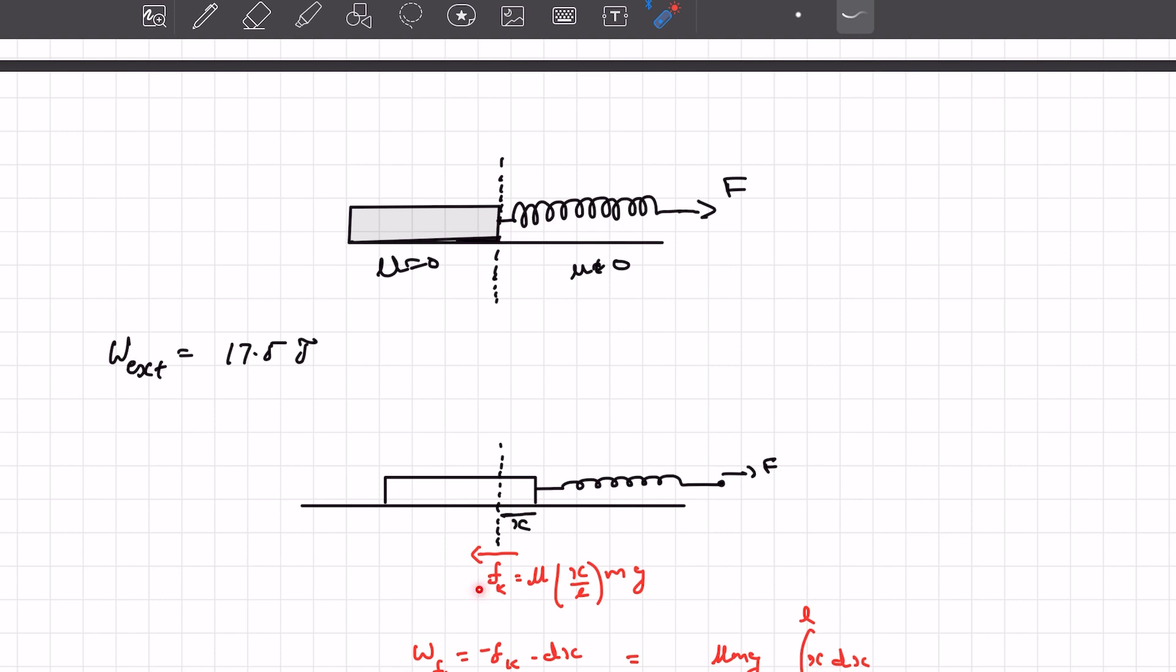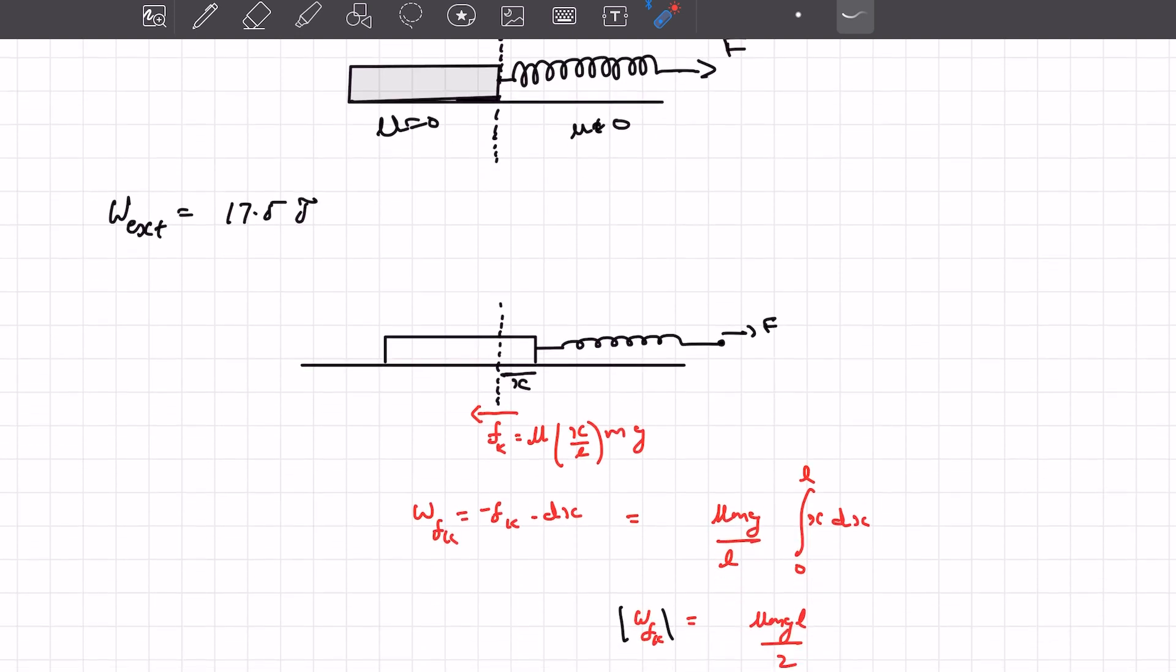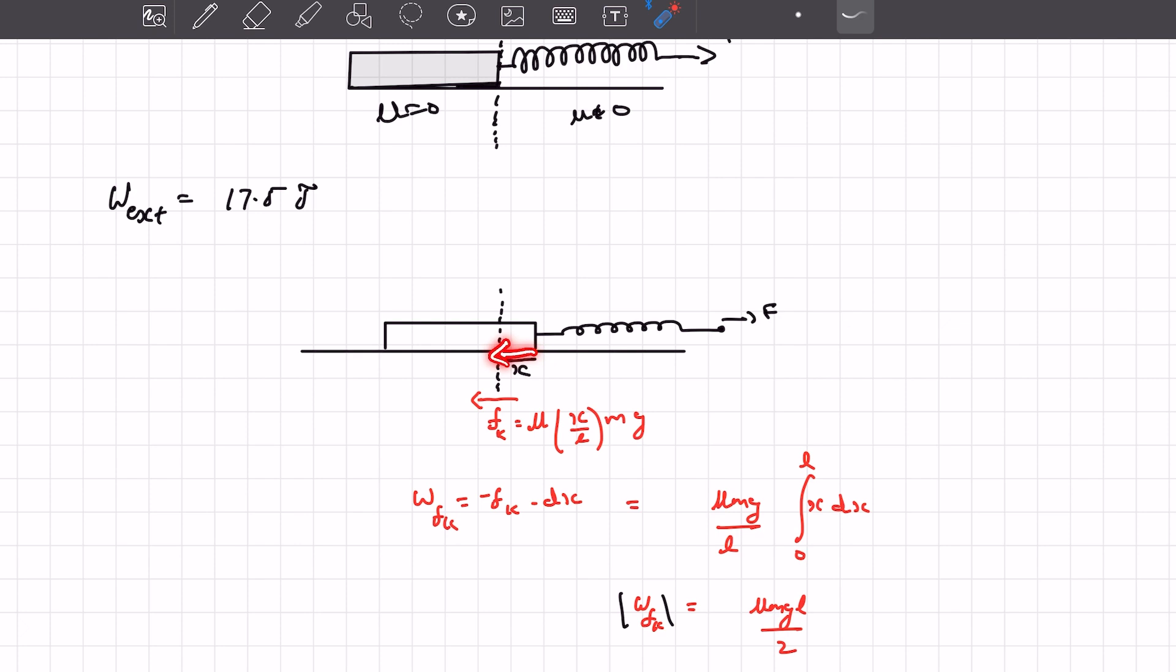So at this instant, we can find the magnitude of kinetic friction acting on this part of the rod to be mu times the normal reaction on this part. The normal reaction on this part would be the mass of this part times g. What would the mass of this part be?